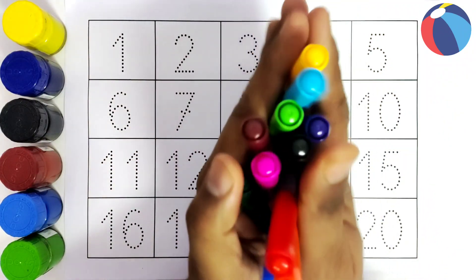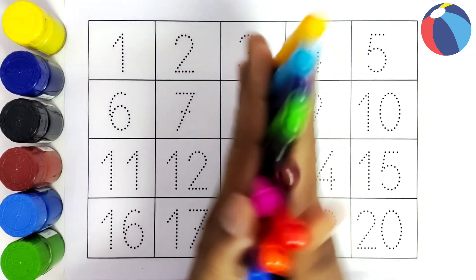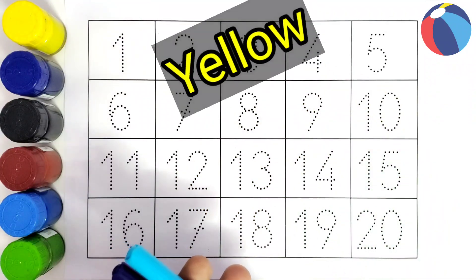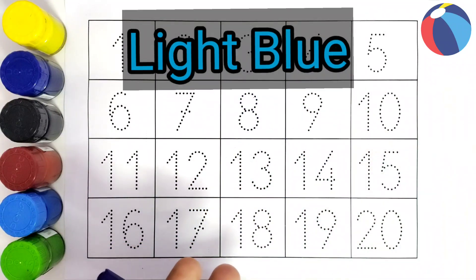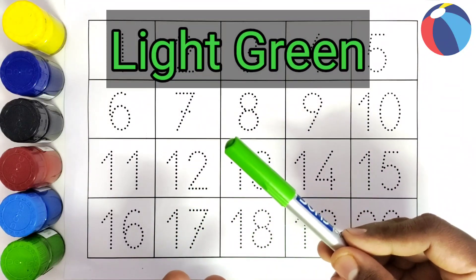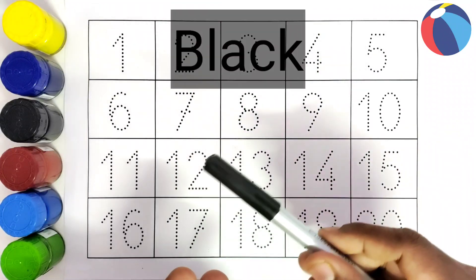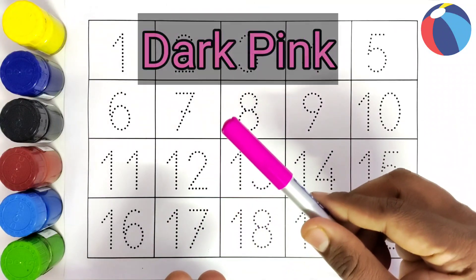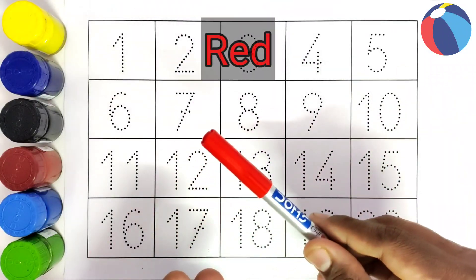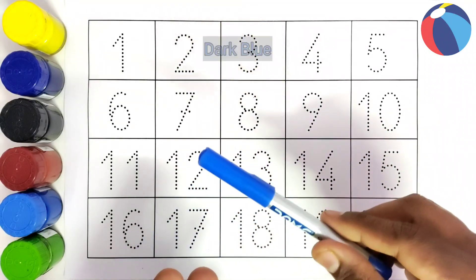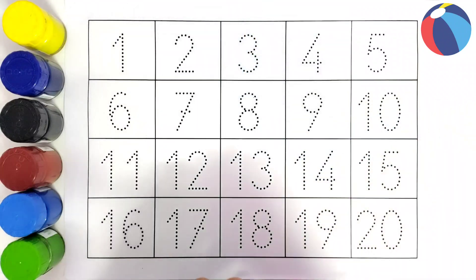With the color names: this is yellow color, this is light blue color, this is purple color, this is light green color, this is black color, this is brown color, this is dark pink color, this is red color, this is orange color, this is dark blue color, this is dark green color.